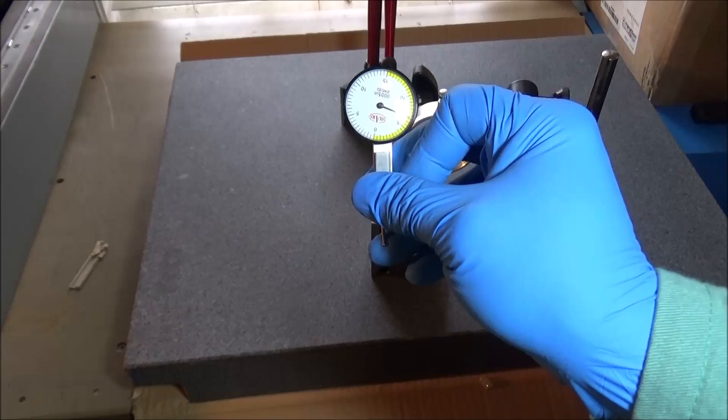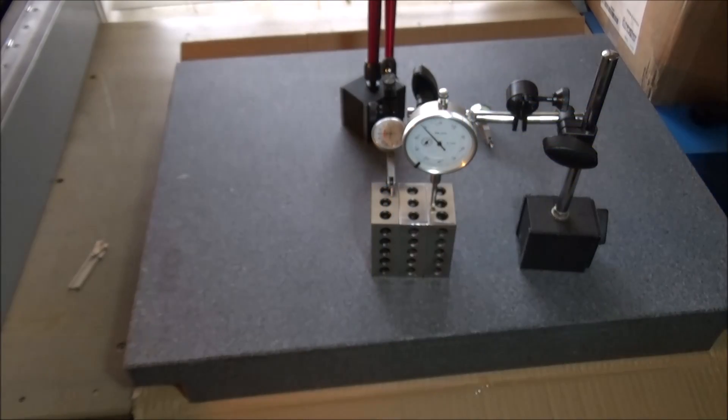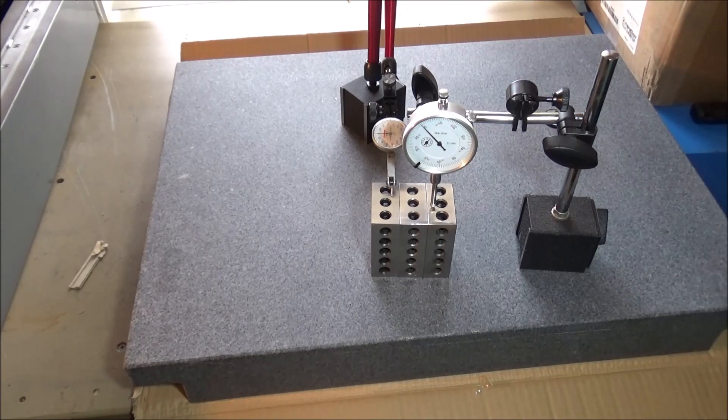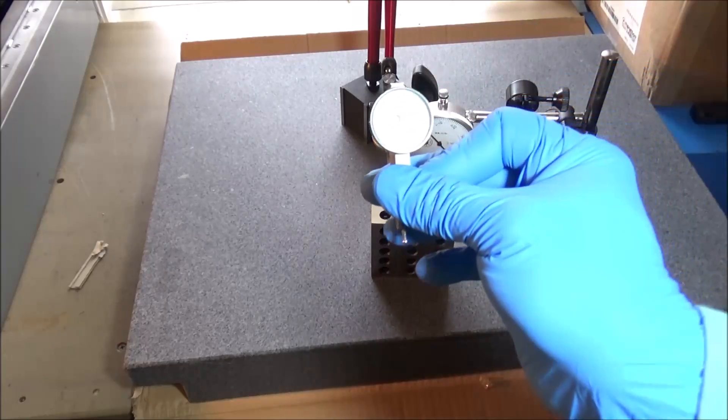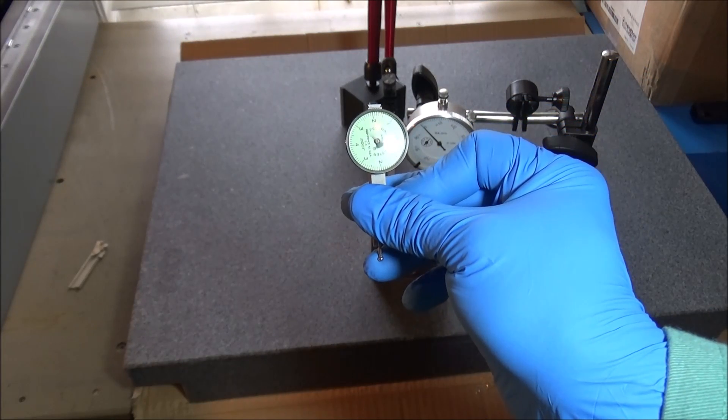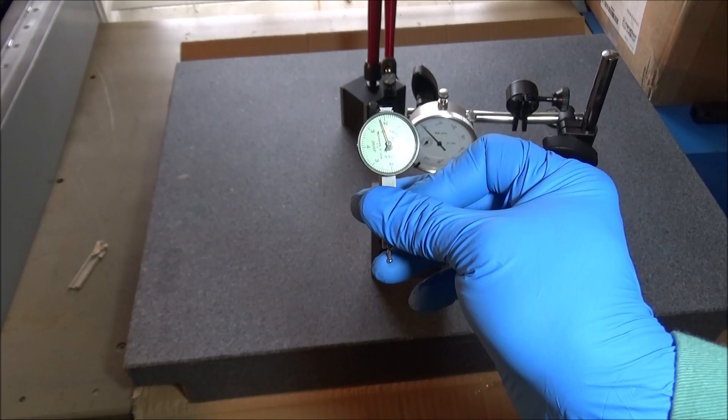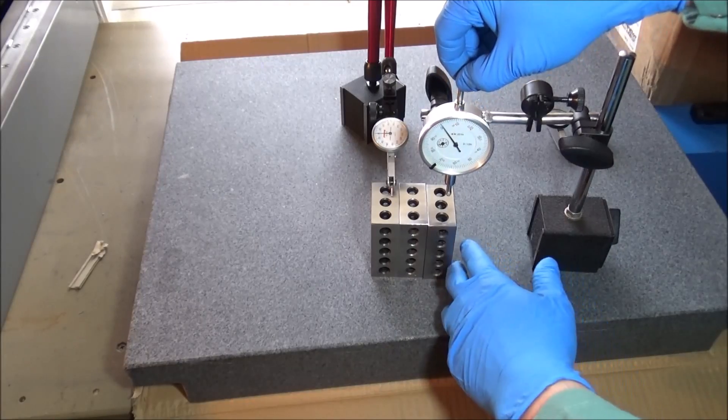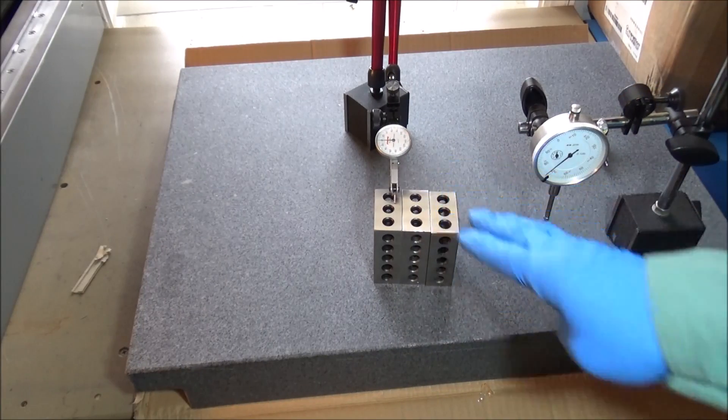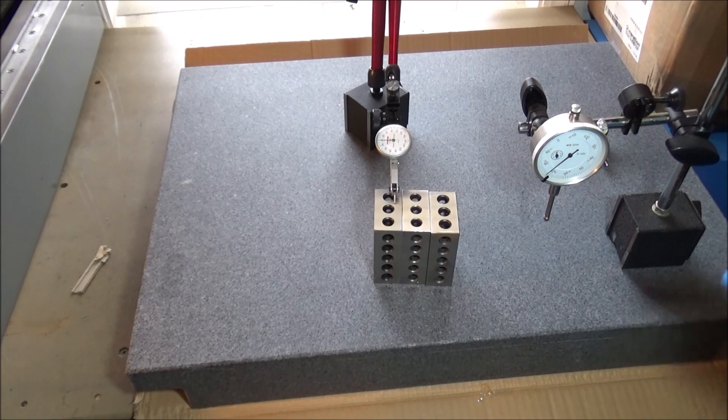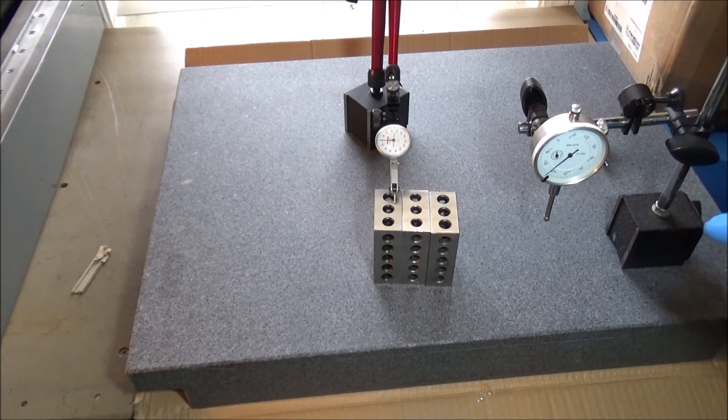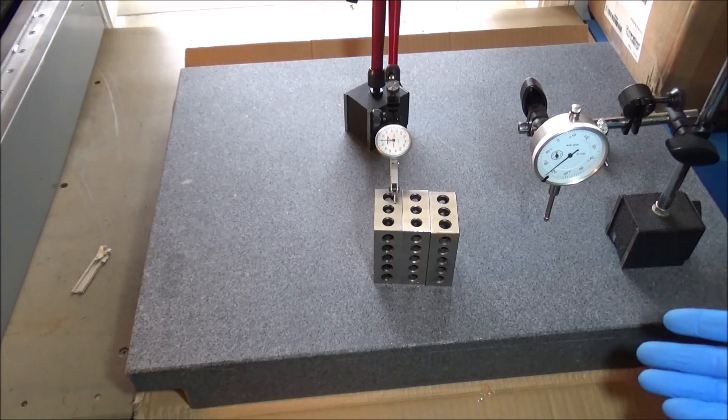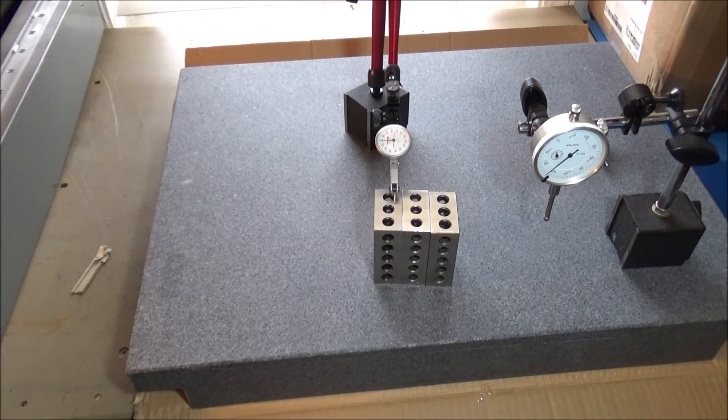I soon realized that was not the case, so then I purchased a half a thousandth indicator. I realized that wasn't giving me the resolution I was looking for, so then I found a Federal Testmaster that is one-tenth of an inch and this worked really well. Then I picked up this indicator which is about two microns, 0.002 millimeters, which is about seventy-eight millionths.